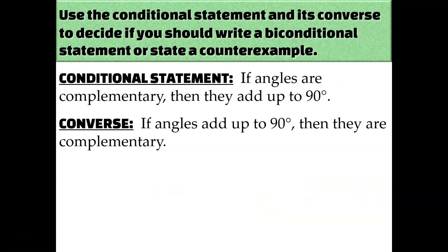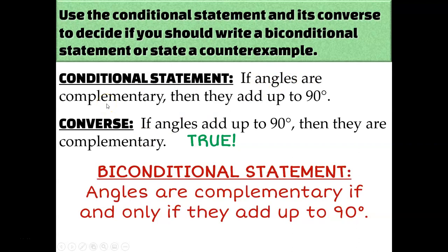Next: if angles are complementary, then they add up to 90 degrees. Converse: if angles add up to 90 degrees, then they are complementary. Can you find a counterexample? No — that's the definition of complementary. If angles add up to 90 degrees, then they're complementary by definition. So we write a biconditional statement: angles are complementary if and only if they add up to 90 degrees.